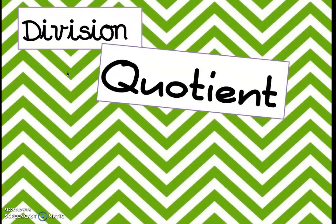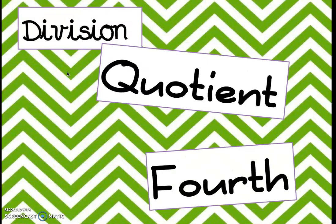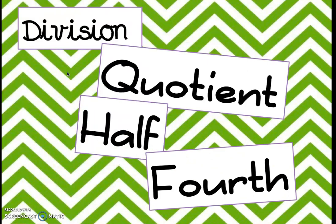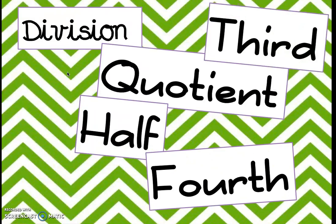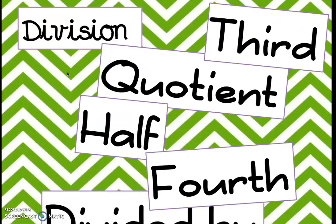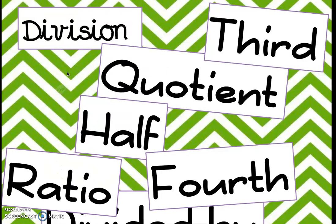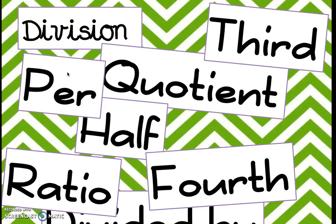For division, we have words like quotient — quotient is the answer to a division problem, so anytime you see that, you know that you're going to be dividing. Fourth would mean we're going to divide by four, half means divide by two, third means divide by three. Divided by is a good one too. Ratio, per — all of these words tell us that we're splitting into groups, so we will be dividing.